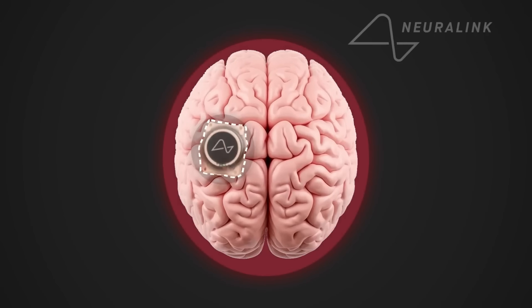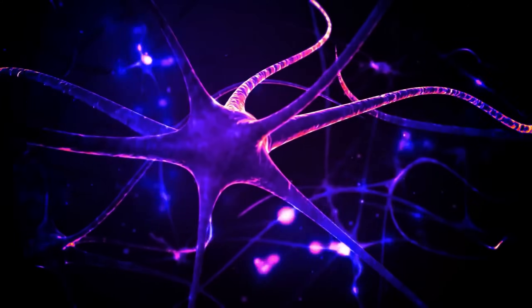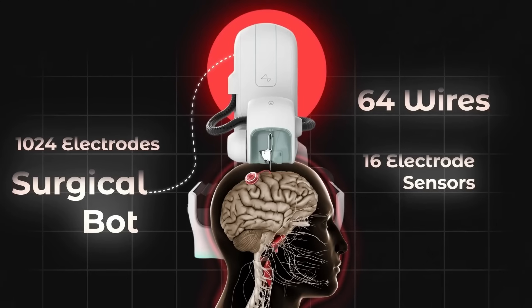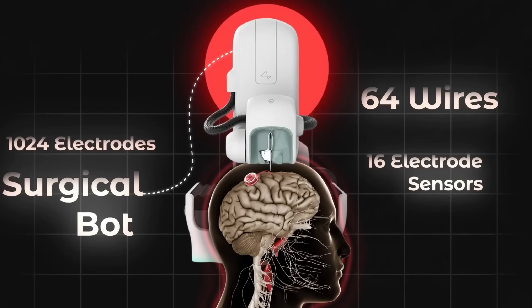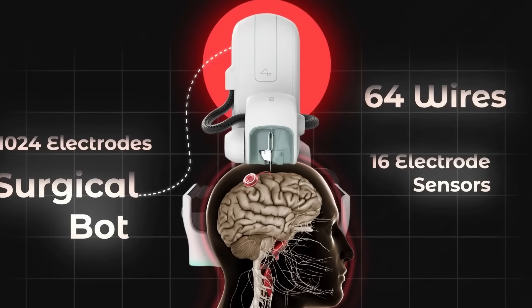The first chip had 64 threads, and each thread was super thin, thinner than a hair, with 16 electrodes each, which added up to 1,024 electrodes.